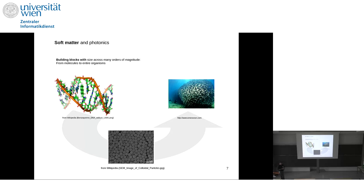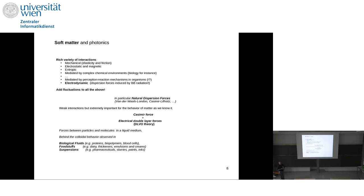The second main ingredient is interactions. In soft matter physics we find a rich variety: direct mechanical interactions, electrostatic and magnetostatic interactions, entropic forces mediated by complex chemical environments — as found typically in biology, where cells are building blocks — and of course electrodynamic interactions induced by blackbody radiation. On top of all this, we have to add thermal fluctuations, which are extremely relevant in these types of systems.